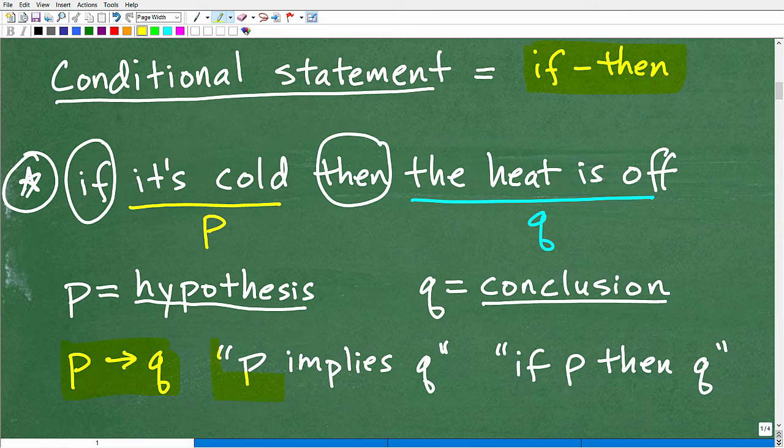Or we could say it this way, P implies Q. So this word implies is used a lot. And then we have if P, then Q. So these are all different ways we can state a conditional statement, right? P, and then you can write it this way or say P, this means P implies Q or if P, then Q.